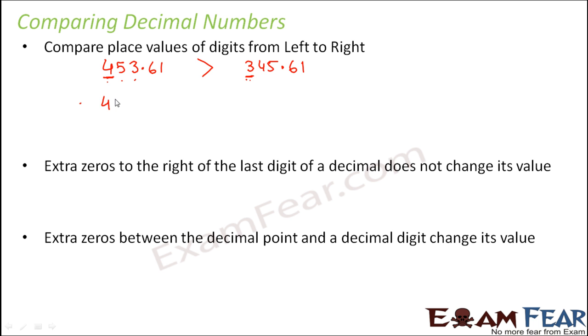Now let us look at another example. Let us say 453.61 and here we have 3451.61. So here also the first number is 4 which is greater than 3. So will this be greater than this number? No, because in this case this 4 is at the hundreds place, but this 3 is at the thousands place. You see, this is 1's, 10's, 100's, 1000's. So 3000 is definitely greater than 400, right? So this would be greater in this case.